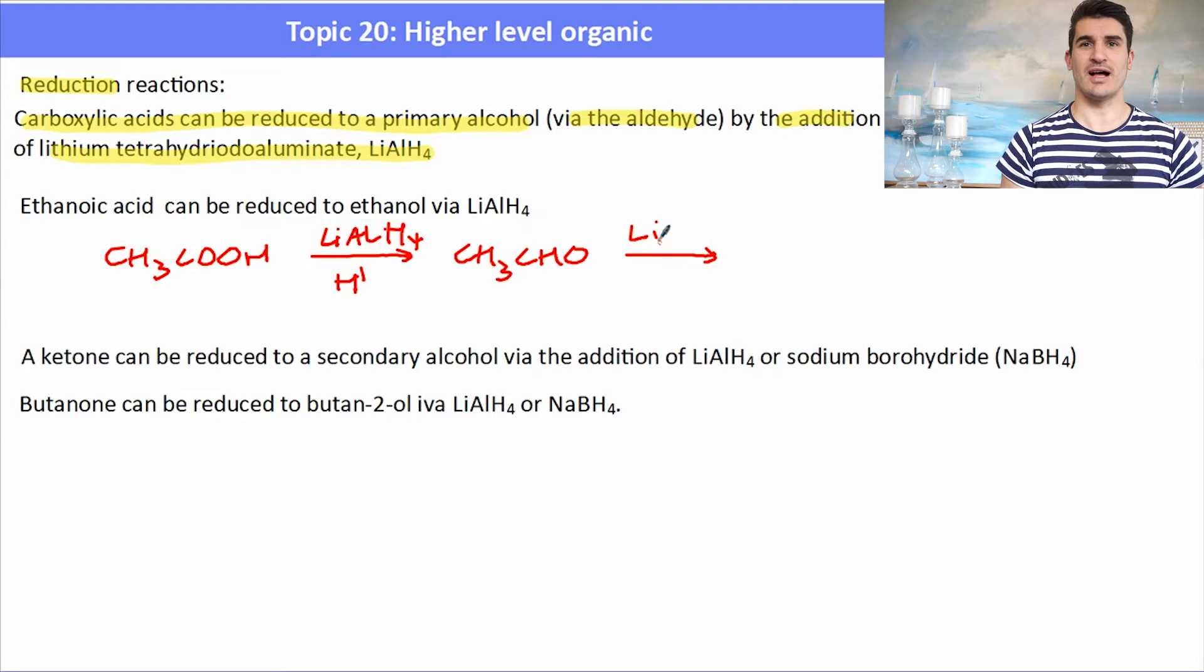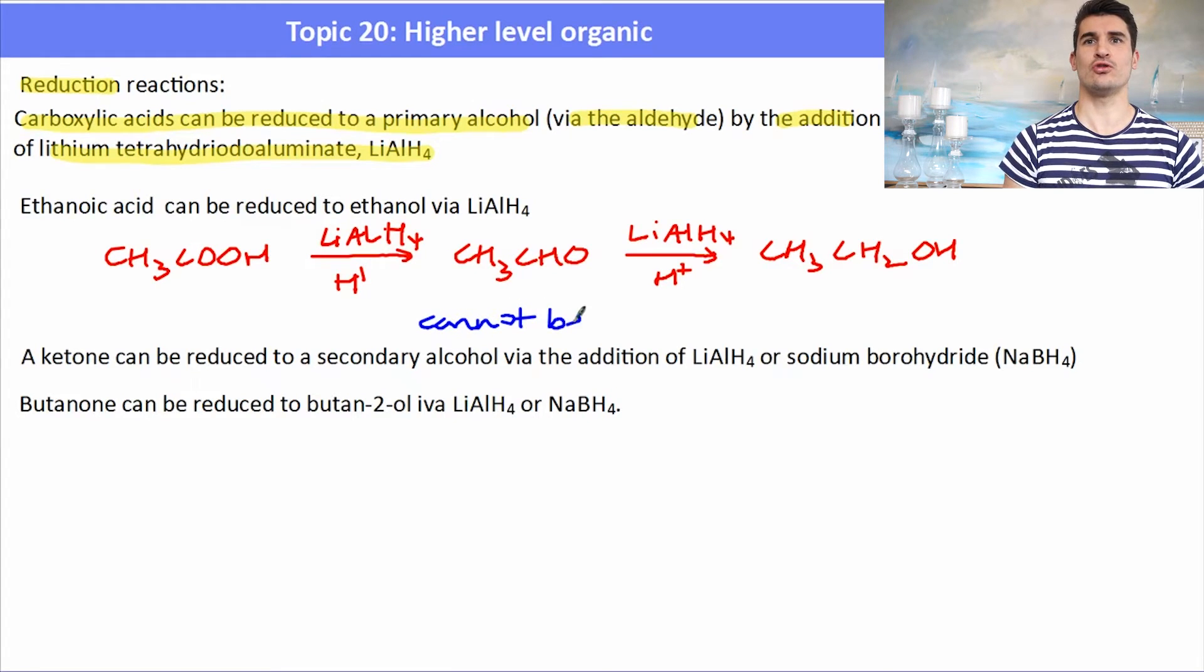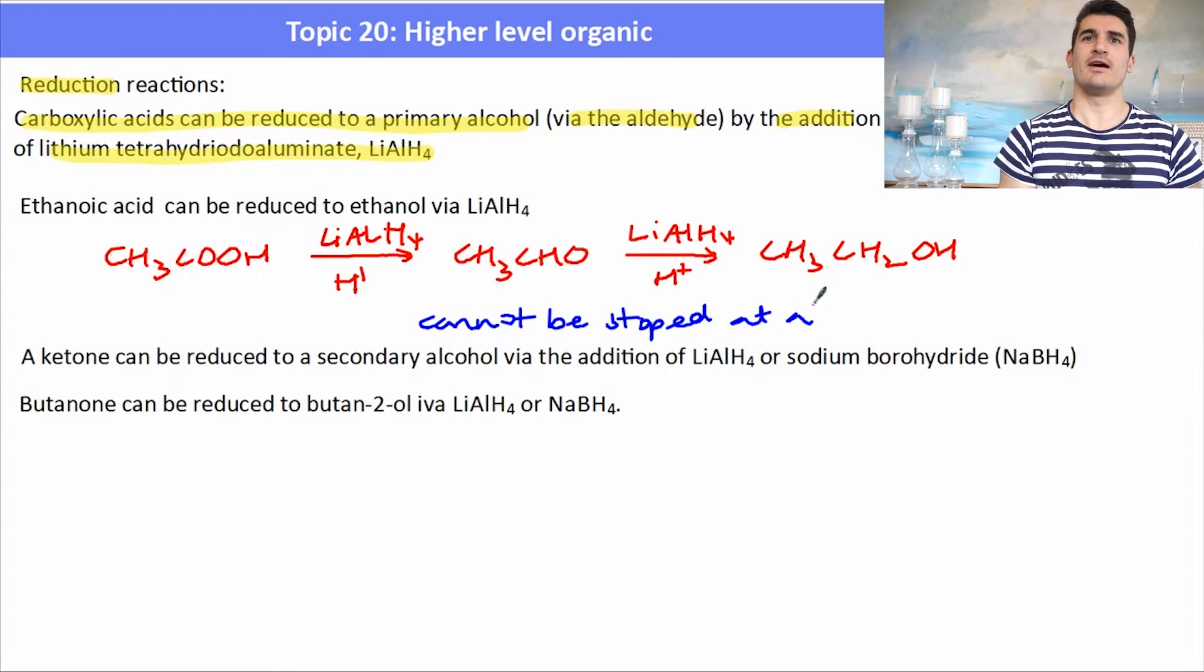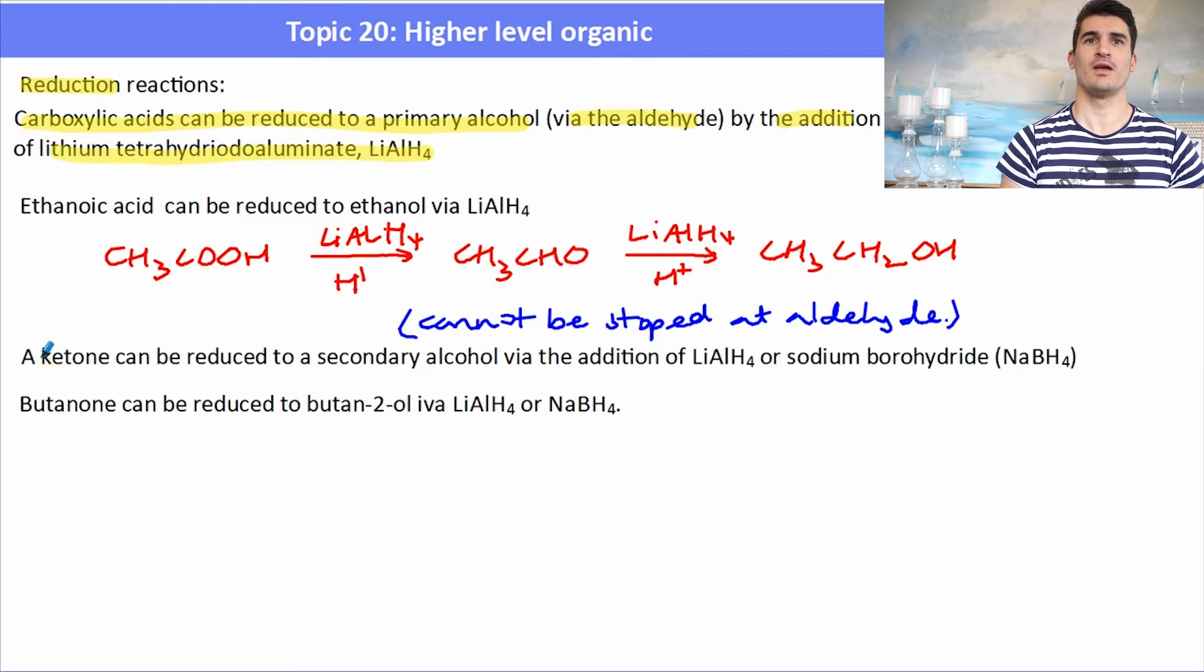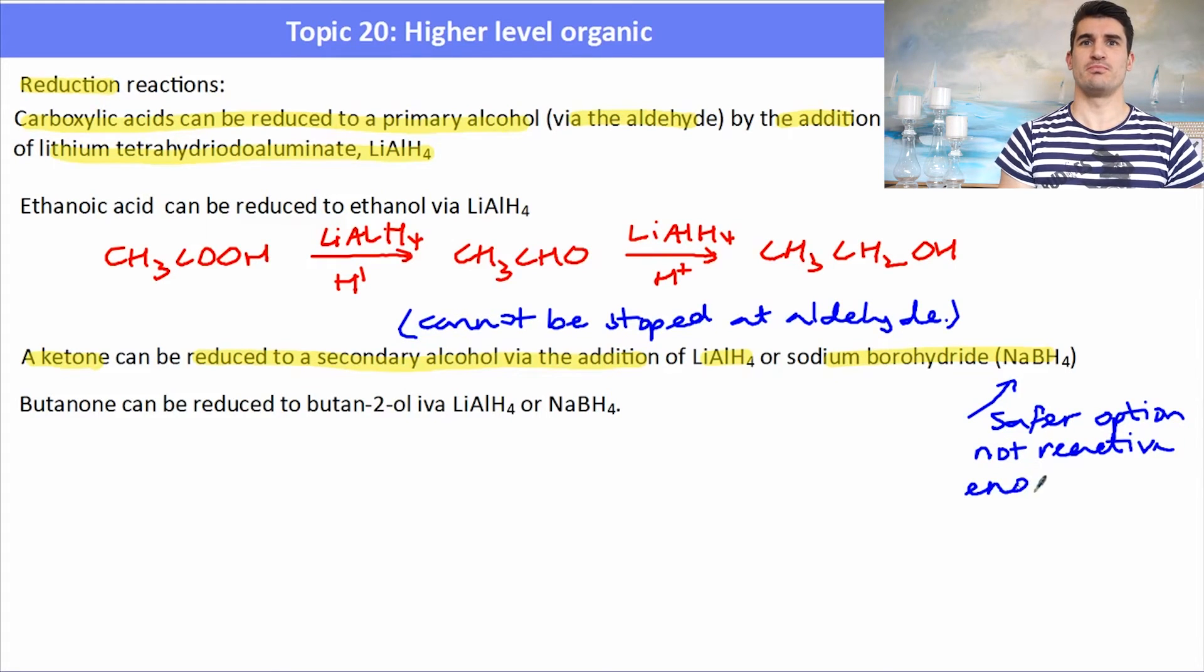A ketone can be reduced to a secondary alcohol via the addition of either two chemicals: LiAlH4 or sodium borohydride (NaBH4). LiAlH4 can only be used for the reduction of a carboxylic acid to an alcohol. When we have a ketone, we can choose to use either LiAlH4 or sodium borohydride. It's a safer option if we are asked to use one to convert the ketone to the alcohol, but it can't be used to convert a carboxylic acid. It's not reactive enough.